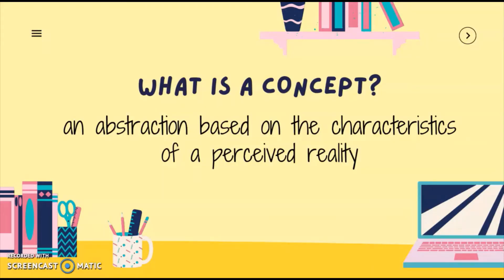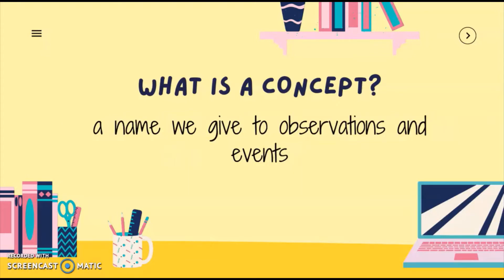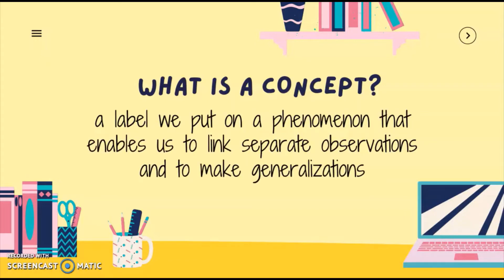Let us first dissect the terms concept and framework. The word concept denotes an abstraction based on the characteristics of a perceived reality. Moreover, it is also a name we give to observations and events, and a label we put on a phenomenon that enables us to link separate observations and to make generalizations. To put it simply, a concept is a name or a label of a certain phenomenon, and in research, this applies to our variables.